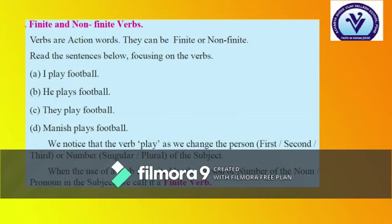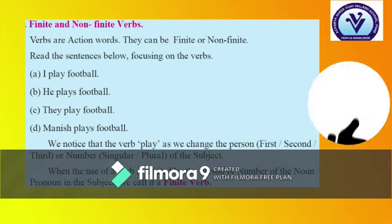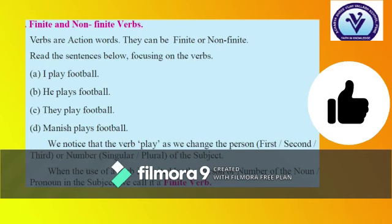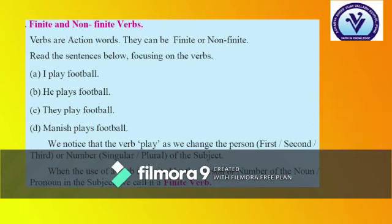Read the sentences below, focusing on the verbs. A: I play football. B: He plays football. C: They play football. D: Punish plays football. We notice that the verb 'play' changes as we change the person — second or third — or the number, that is singular or plural, of the subject. When the use of a verb is limited by the person or number of the noun or pronoun in the subject, we call it a finite verb.